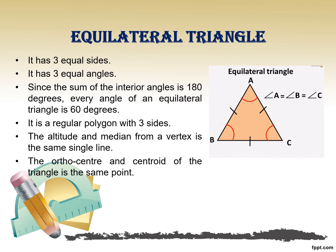Therefore, this equilateral triangle is also called an equiangular triangle. It is a regular polygon, meaning all the sides are of equal length. The altitude and median pass through the same point from the vertex to the base, and hence the orthocenter and the centroid coincide at the same point in an equilateral triangle.